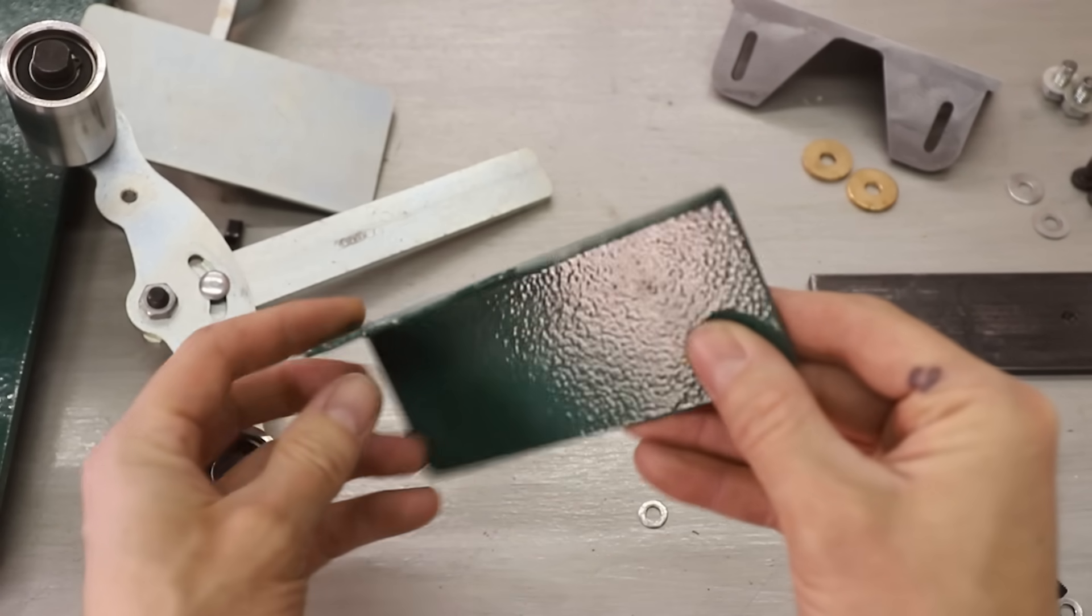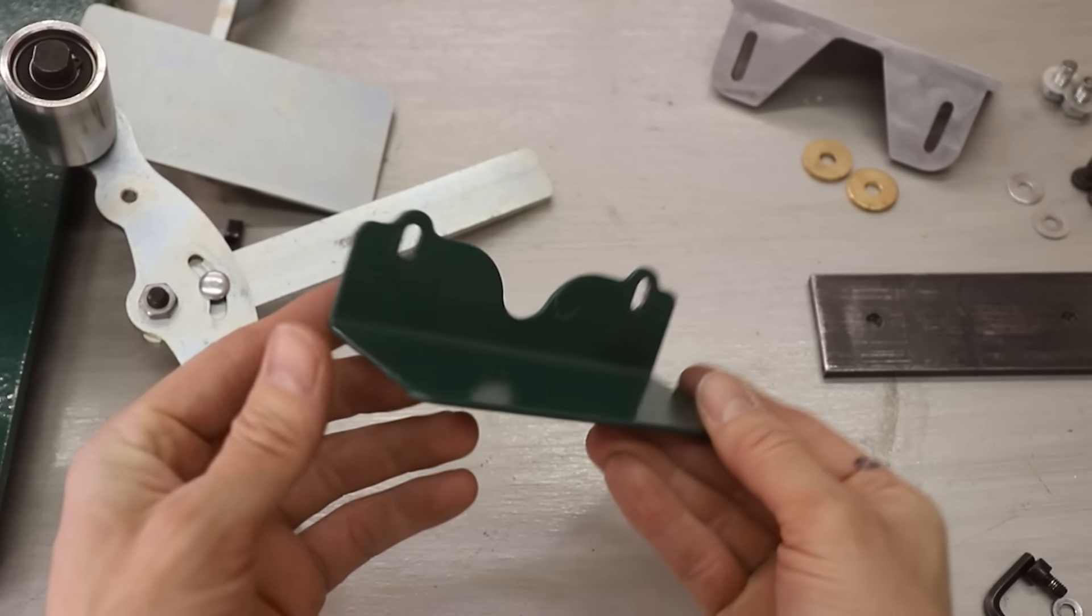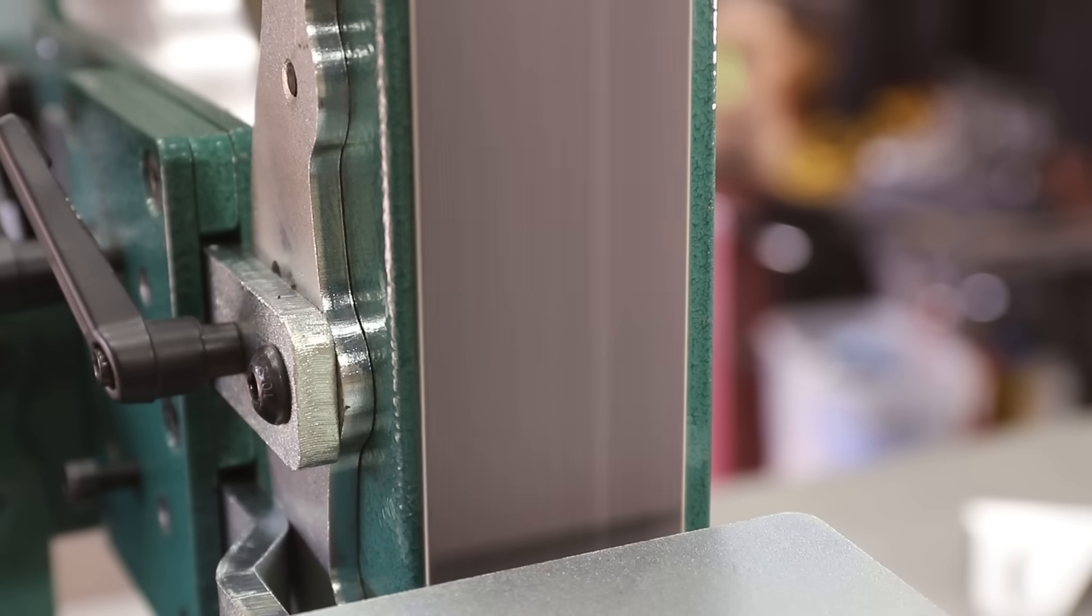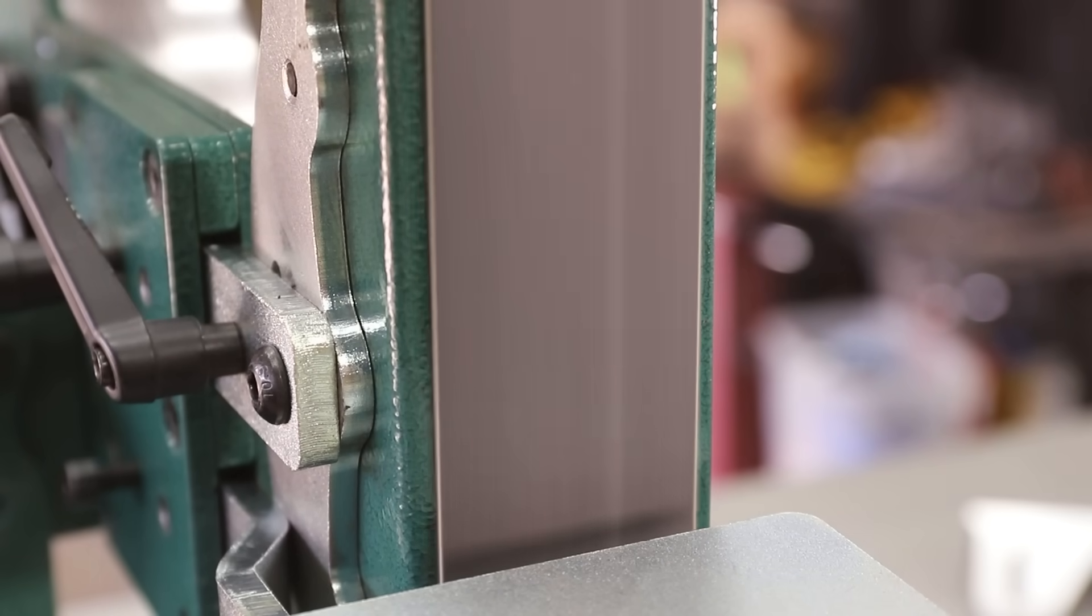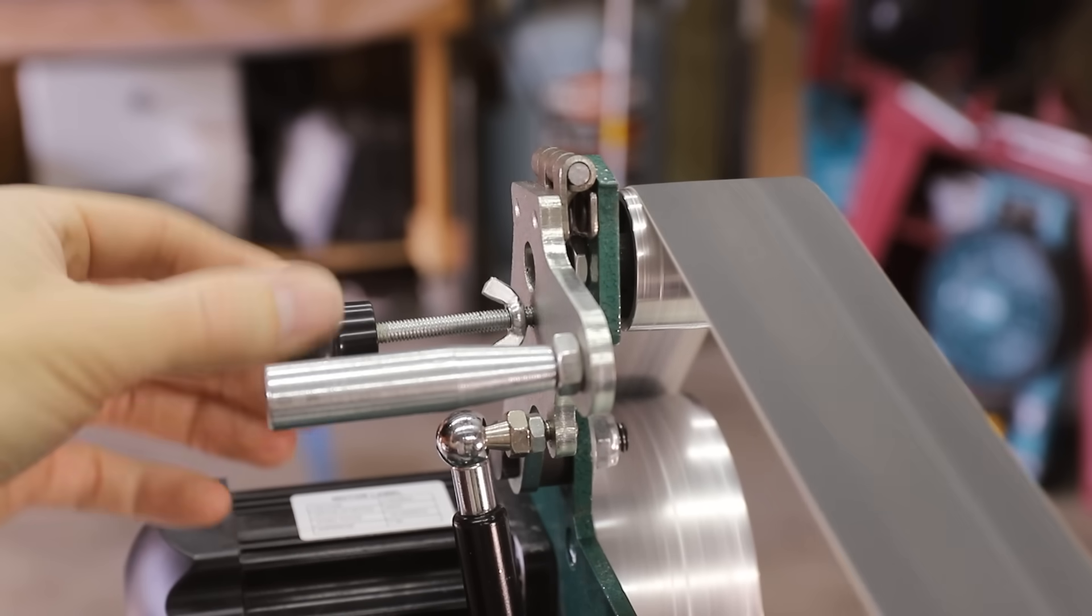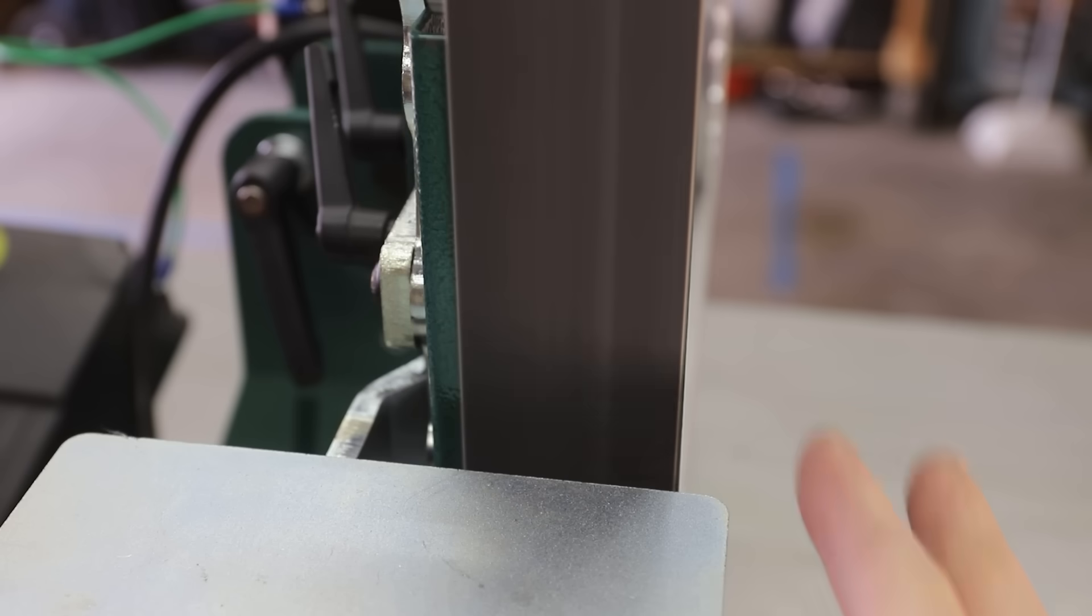The platen bracket is also super flimsy and really needs to be more rigid than it is. But more importantly, it's wider than the belt, and the tracking won't allow the belt to go far enough over to the left to be flush with the bracket. It's really important to be able to bring it right over to the edge in order to get into corners or to grind a bevel onto a knife.